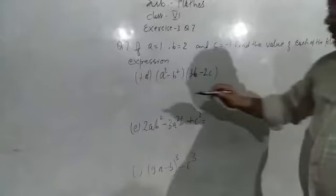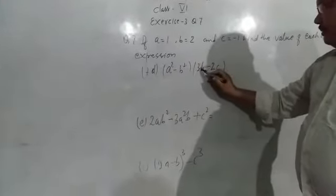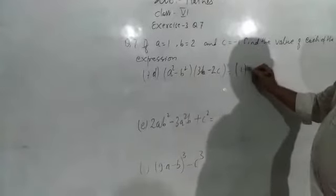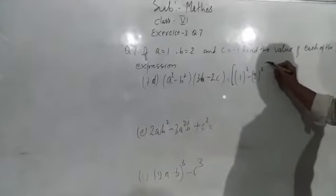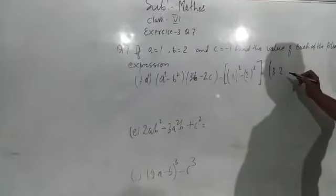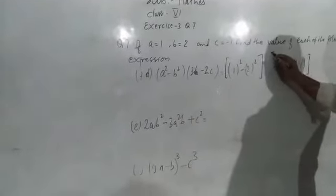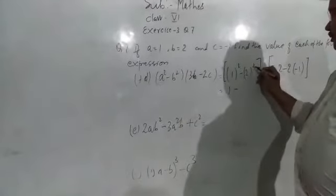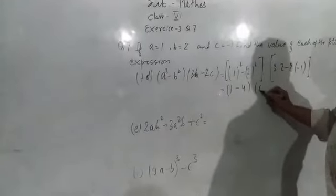Question number 7D: A squared minus B squared, into 3B minus 2C. So A means 1's whole square, and minus B means 2's whole square in bracket, into another bracket: 3 into B means 2, and minus 2 into C's value is minus 1. So multiply it. 1 squared means 1, minus 2 whole squared means 4.